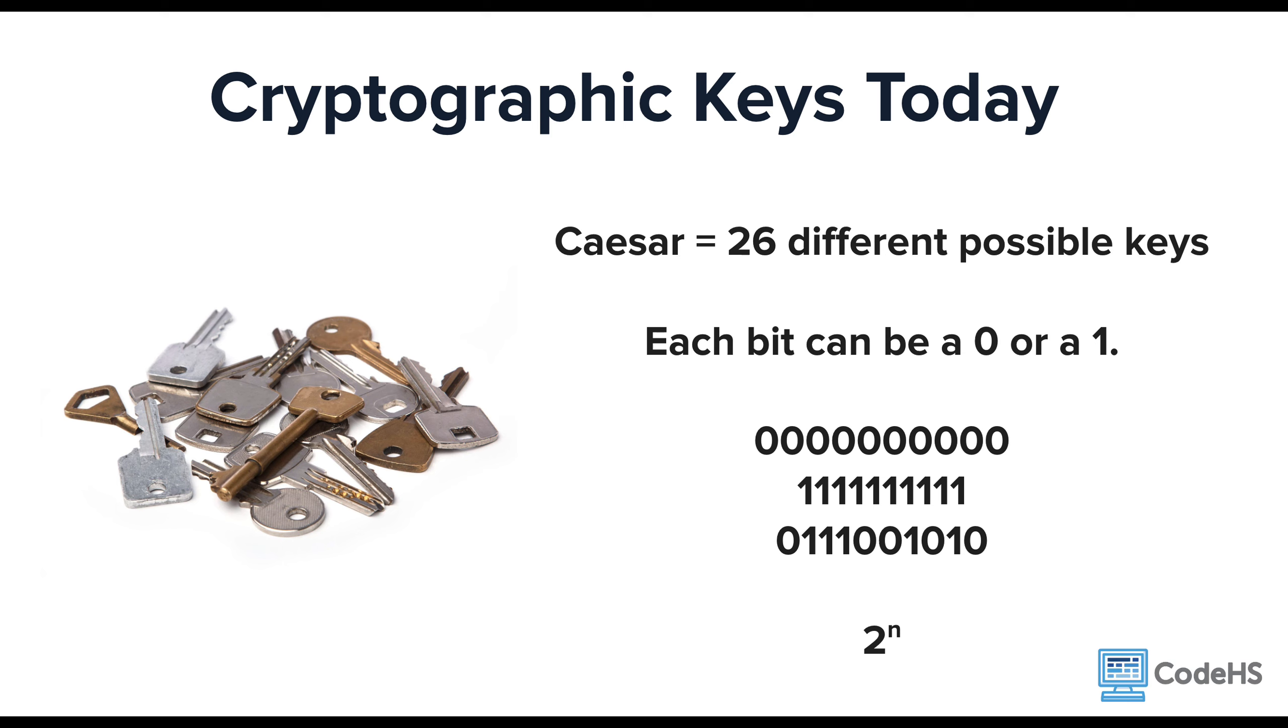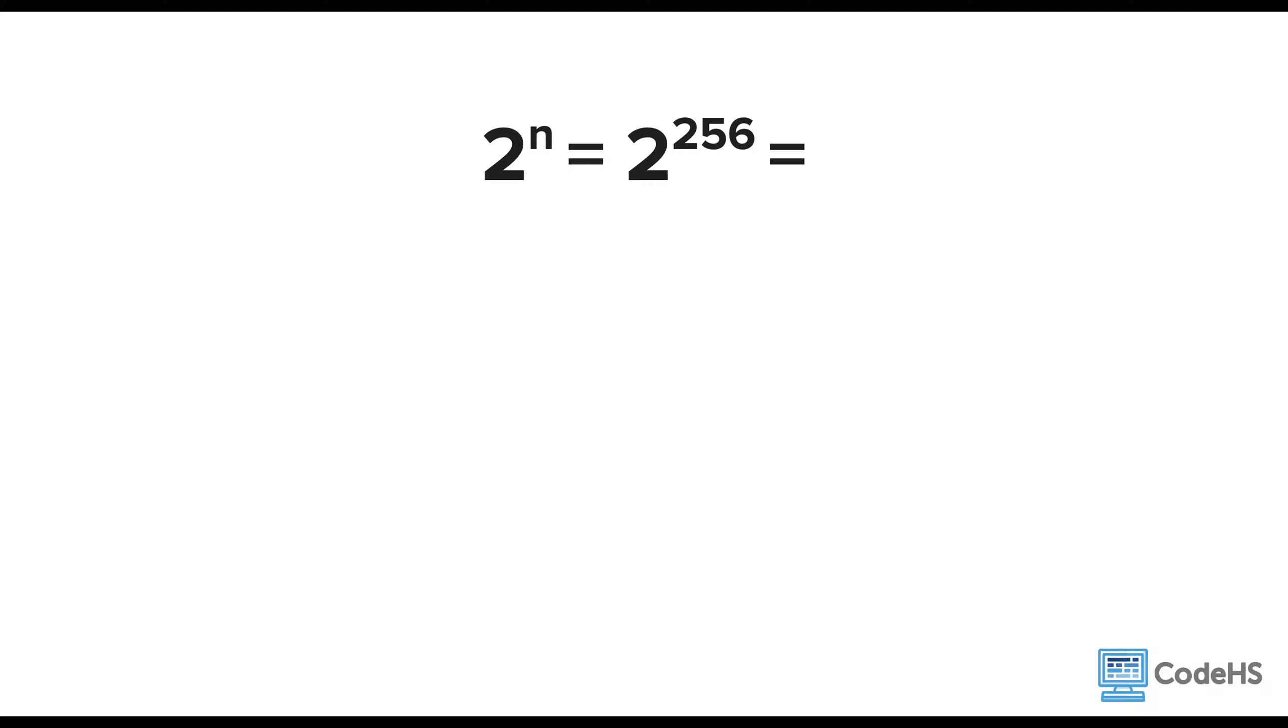The number of different possibilities can be represented by 2 to the n power. So for a 10-bit key, this is 2 to the 10th power, or 1024 different possible keys. Well, that's much better than 26. In today's encryption, it's common for a key length to use 128 or 256 bits.